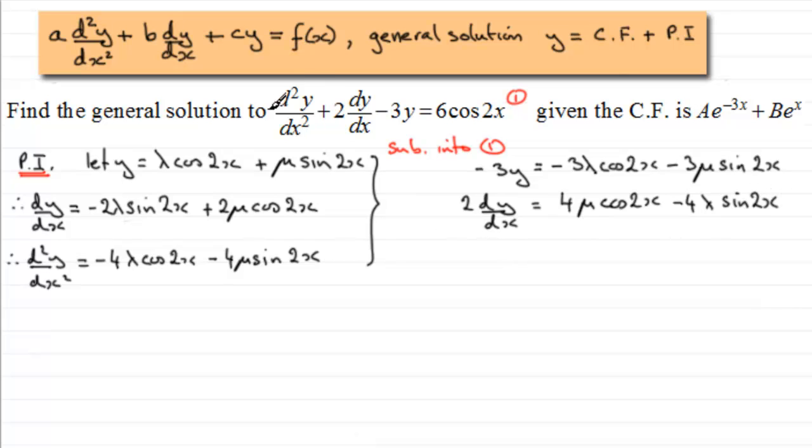And finally, we've got d²y/dx². We don't have to do anything to that. So let's just copy that in. We'll take it in the order that it's there. So we've got minus 4 lambda cos2x and then minus 4 mu sin2x.